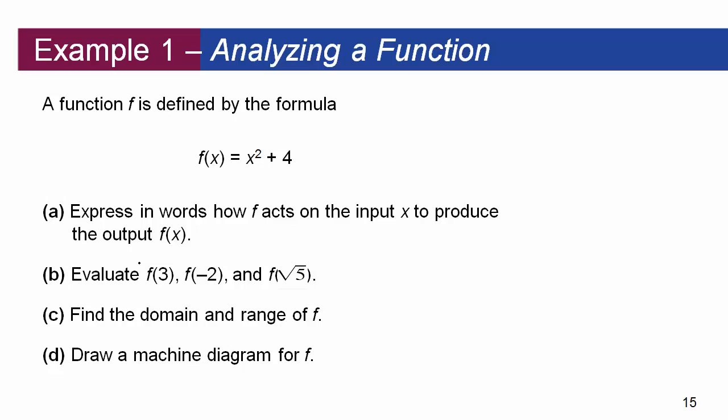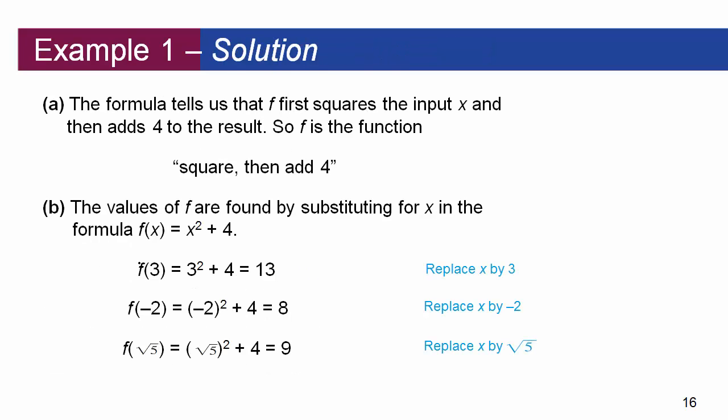So how do we analyze a function? We can express it in words — what does this thing do to the input? We can evaluate it at certain points. We can find its domain and range, and then we can draw what it looks like. If we look at the function x squared plus 4, when you put a number in it first squares it, then adds 4. So f of 3 means you square 3 then add 4. For f of the square root of 5, you square it to get 5, add 4, and get 9. Being able to translate it into English helps you do the math properly.